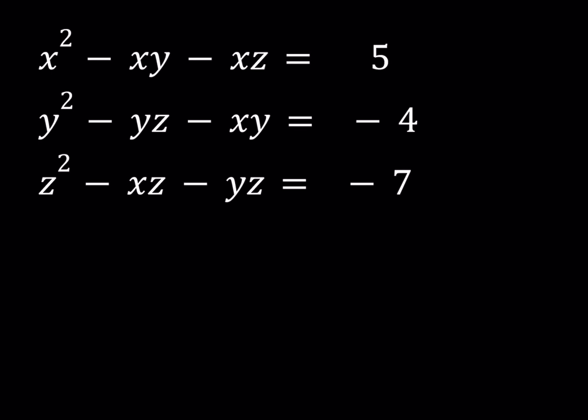Hello everyone. In this video we're going to be solving a system of equations. We have x squared minus xy minus xz equals 5, y squared minus yz minus xy equals negative 4, and z squared minus xz minus yz equals negative 7. We're going to be looking for x, y, z values, real or complex.